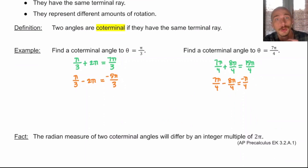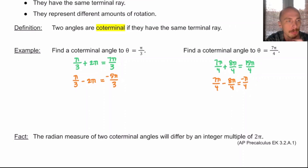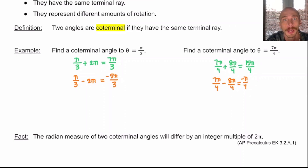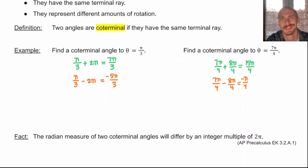In conclusion, the evidence was pretty plain to see: the radian measurement of two coterminal angles must differ by an integer multiple of 2π. So I could keep adding more 2π's or subtracting more 2π's and that would give me more coterminal angles.